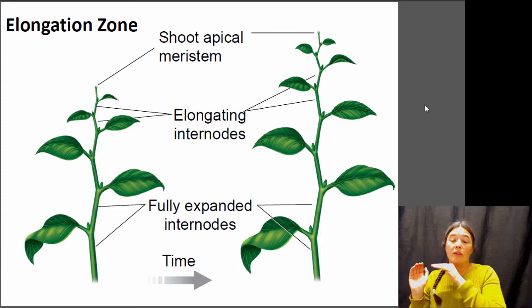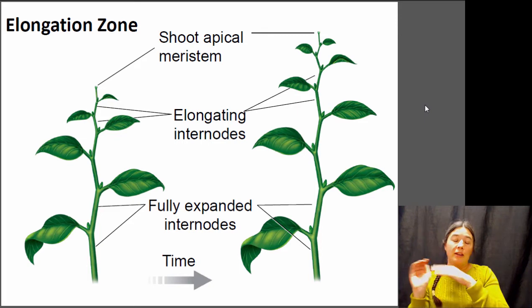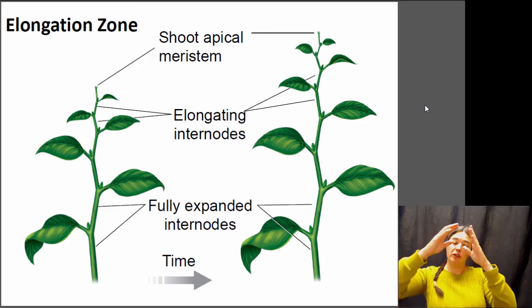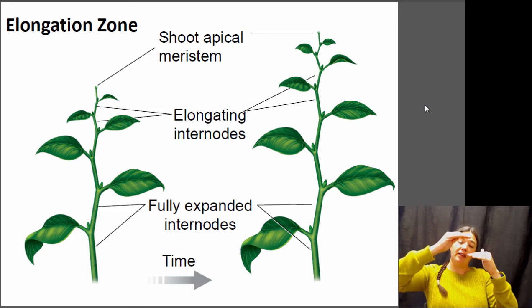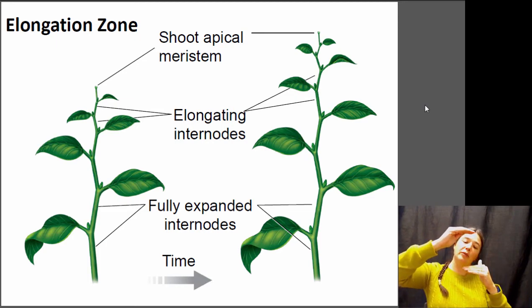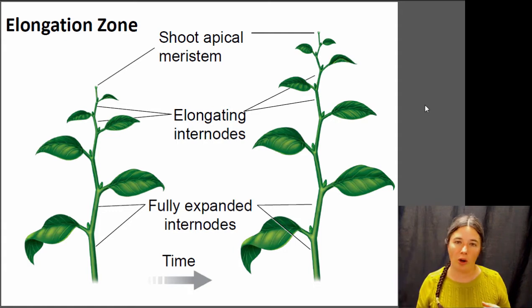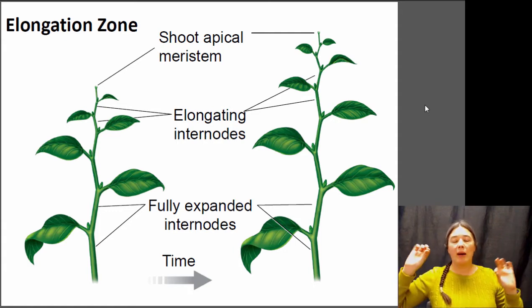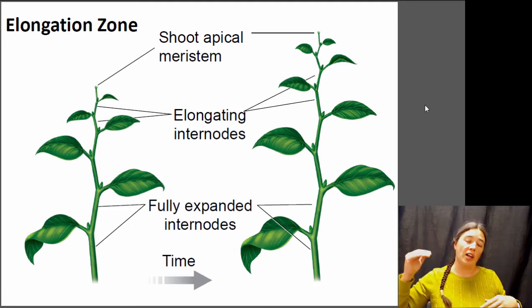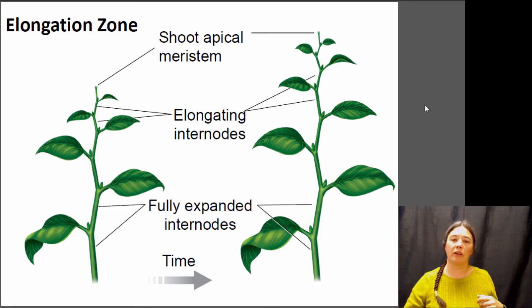All growth within that shoot is going to be happening in that apical meristem. The internode zones between those nodes are where elongation will be happening. Cell division is happening up at the apical meristem, and then those cells within the internode will elongate and allow the plant to grow taller. There's no additional cell division going on during that elongation period, so the distance between nodes changes due to elongating cells, not more cell division.